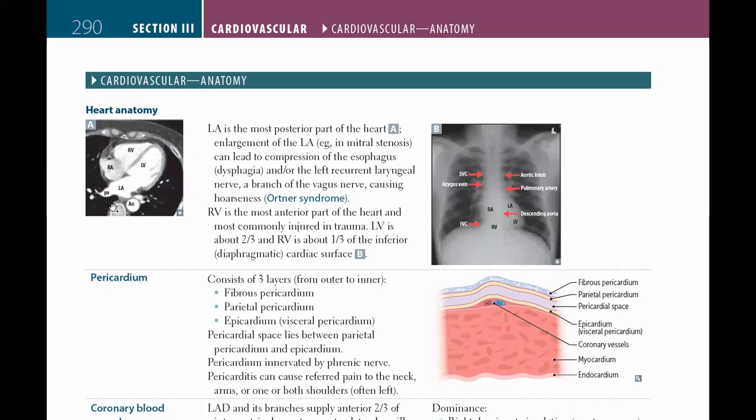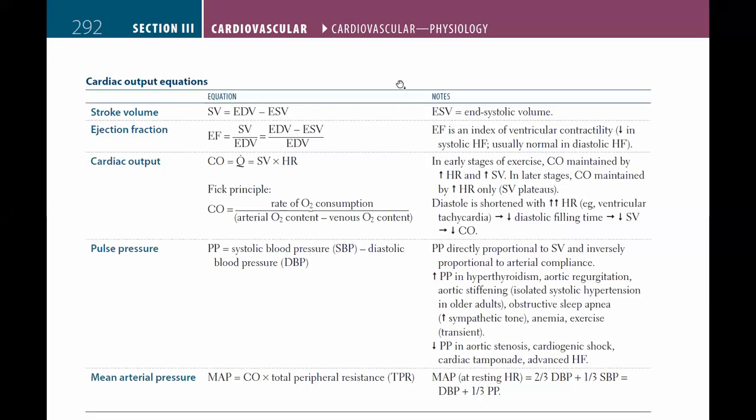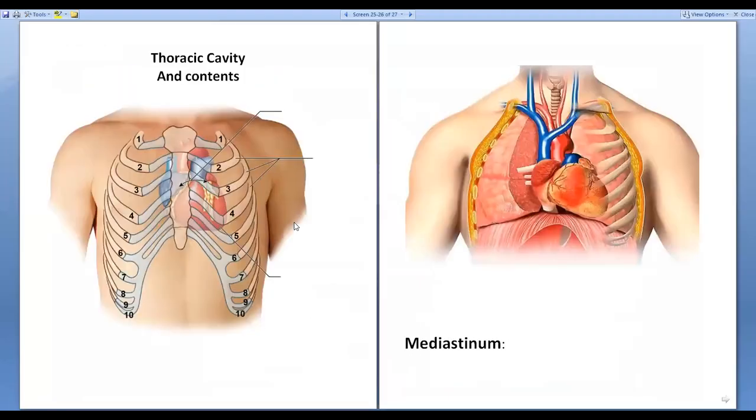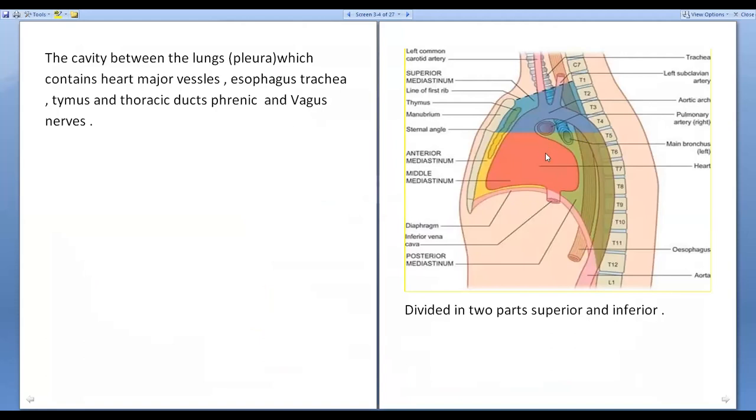Sometimes left atrium in some diseases which we will discuss later get enlarged. So what does it cause? It causes compression of the esophagus. Look here, we have esophagus here. I had show you that diagram that we had. Esophagus behind the left atrium. This is right atrium, left atrium right posterior. This is esophagus. When this left atrium is enlarged, it causes dysphagia.